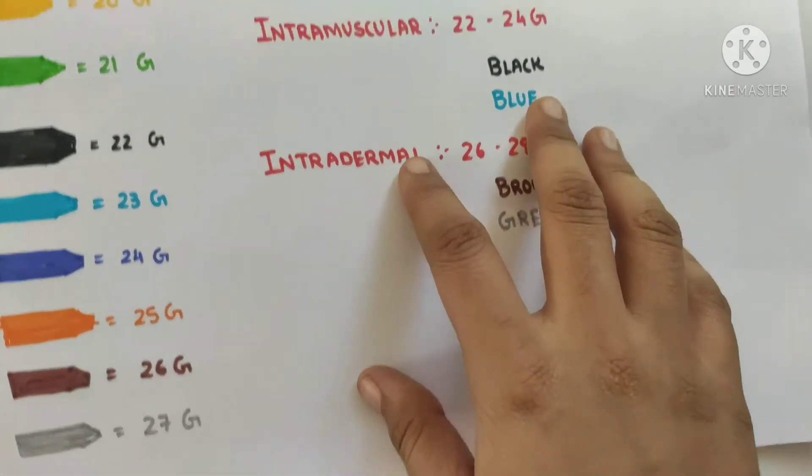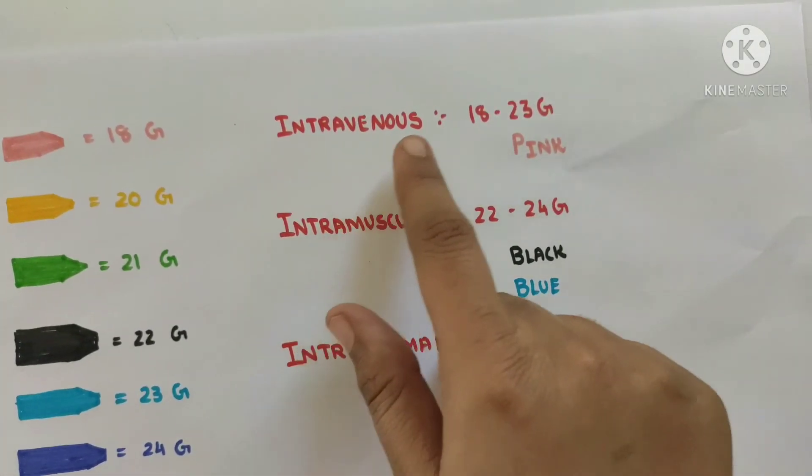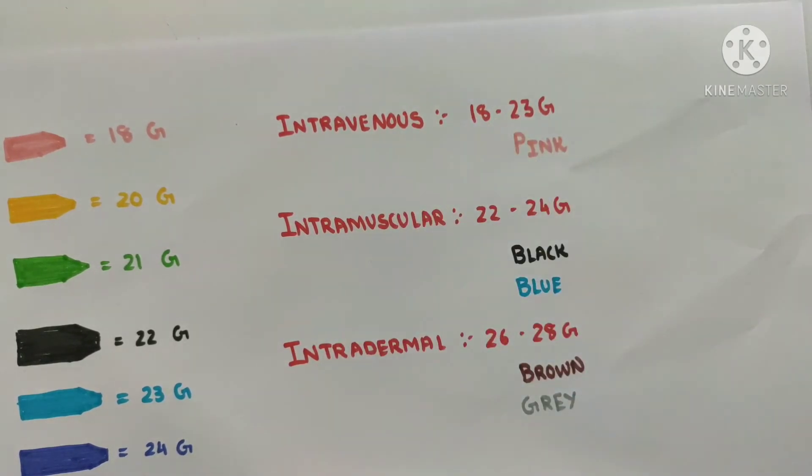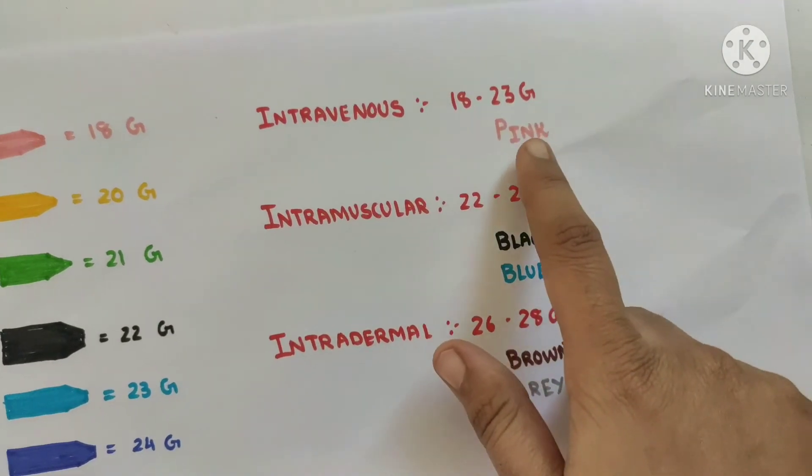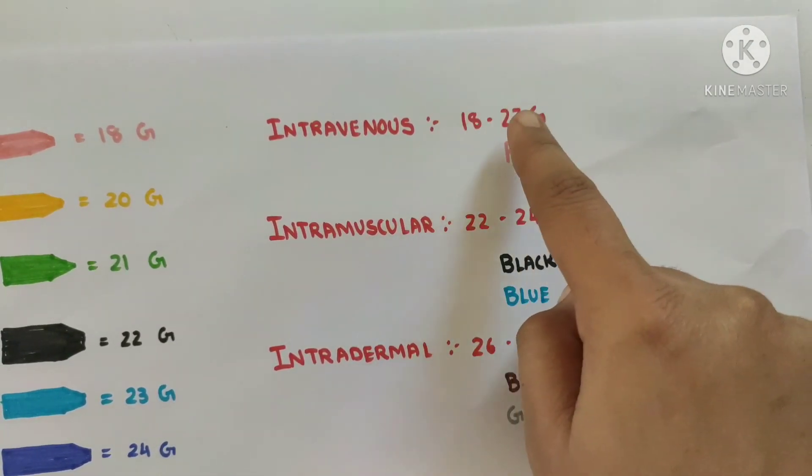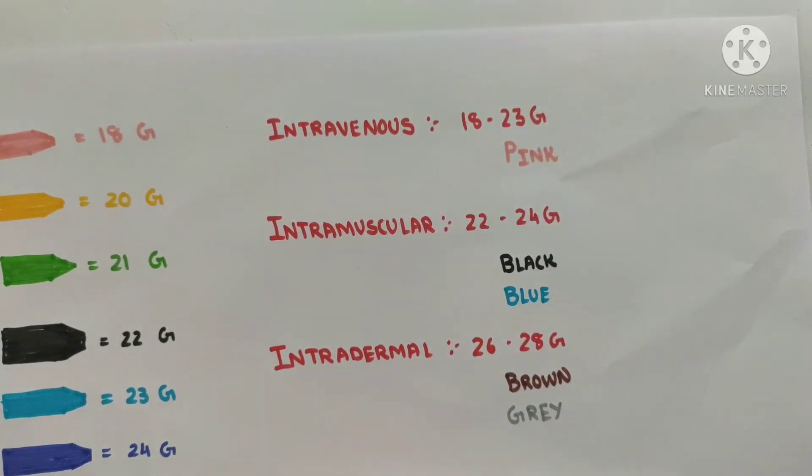Now we know that through intravenous route we can give any amount of drug, so it should have a large diameter and hence less number of gauge, that is around 18 to 23 gauge. So we will use the needle with pink colored hub.